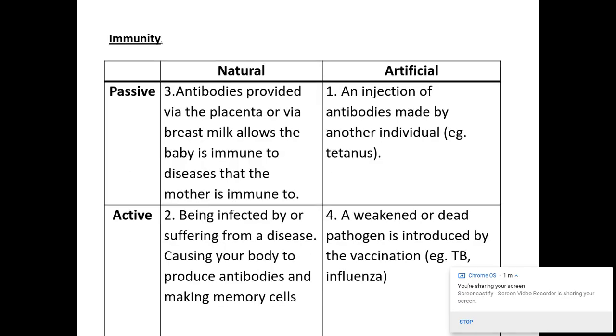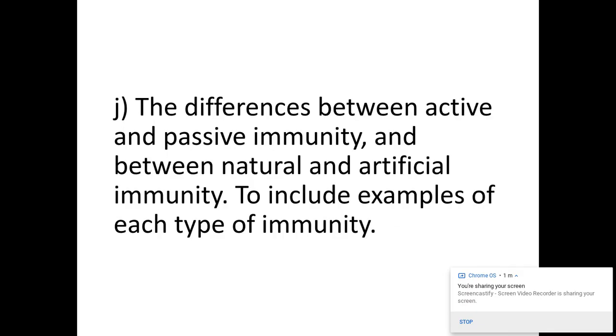So those are where the answers should go. I'm not going to read through them because I think they're pretty self-explanatory. If you link back to the previous table that was explained, have a read around and have a think about other types of diseases or other types of interactions with antibodies that might fit into these different areas as well that might come up on the multiple choice questions.